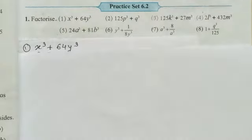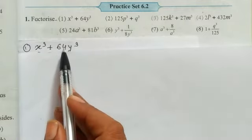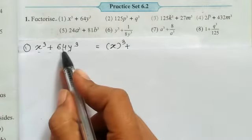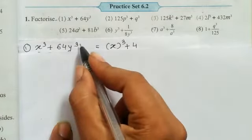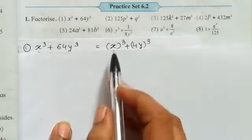The first question is x³ + 64y³. Observe that 64 is already the cube of 4 (4³ = 64). So the cube root of 64 is 4, and the cube root of y³ is y. We write this as x³ + (4y)³. Now arrange it systematically: the cube of x plus the cube of 4y.